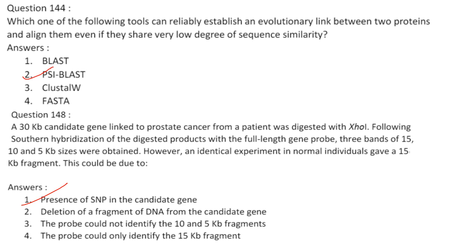A 30 kb candidate gene linked to prostate cancer from a patient was digested with XhoI. Southern hybridization with full-length gene probe gave three bands of 15, 10, and 5 kb. An identical experiment in normal individuals gave only a 15 kb fragment. Approximately 60% of hereditary prostate cancer and over 100 recognized SNPs are associated with prostate cancer. The extra two bands may be due to SNPs in the prostate cancer gene creating additional restriction sites. Answer is option 1, presence of SNP in the candidate gene.